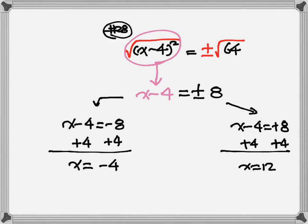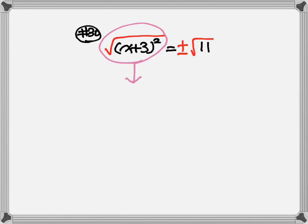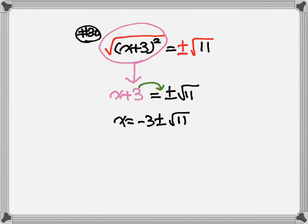Next, let's look at number 30. We have (x plus 3) squared is equal to 11. Step 1: take the square root on both sides of the equation. On the number side, put down plus or minus. The square root and the square cancel out — write down whatever's inside the parenthesis: x plus 3. Equal to plus or minus square root of 11. We cannot take out the square root of 11, and we cannot combine the 3 and the square root of 11 because one is inside and one is outside. So move the 3 to the front: x is equal to negative 3 plus or minus square root of 11. That's our answer.